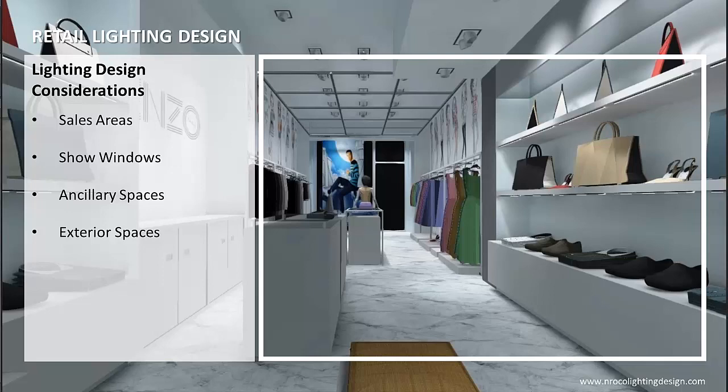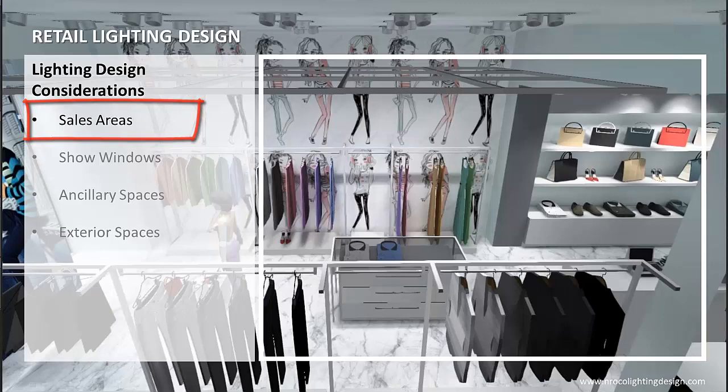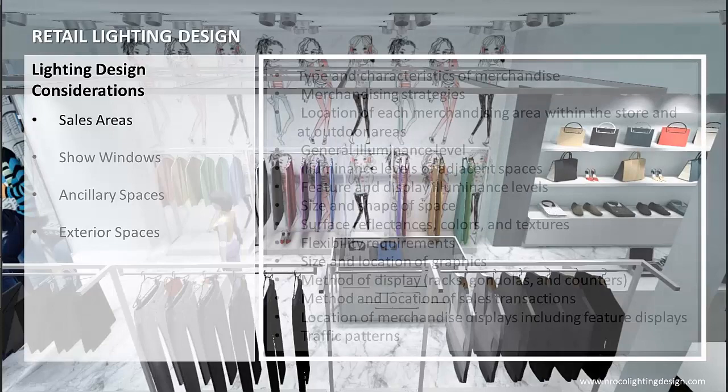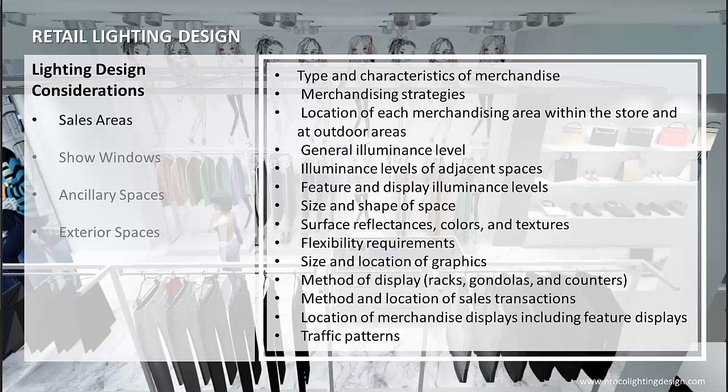Retail spaces should be conducive to initiating and completing sales transactions. Factors to consider in the design of sales area lighting include: type and characteristics of merchandise, merchandising strategies, location of each merchandising area within the store and at outdoor areas, general illuminance level, illuminance levels of adjacent spaces, feature and display illuminance levels, size and shape of space, surface reflectances, colors, and textures, and flexibility requirements.